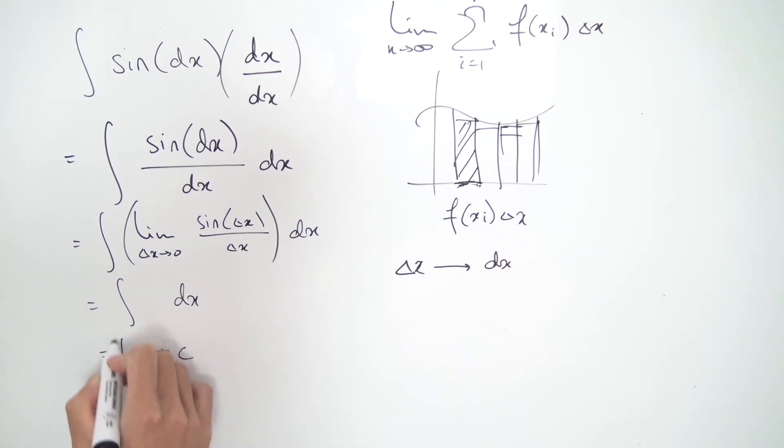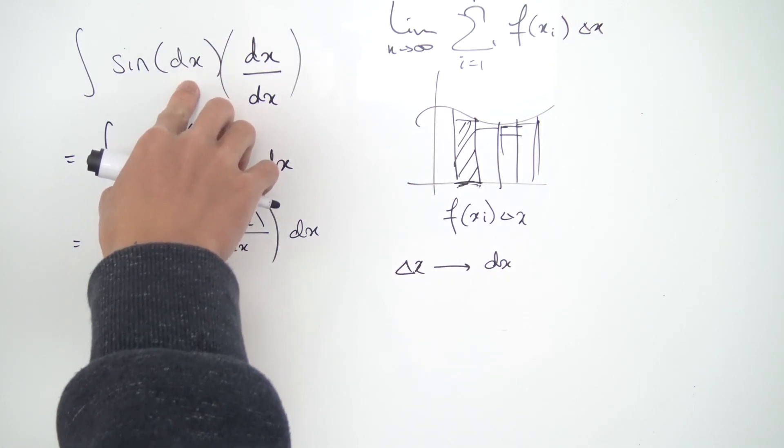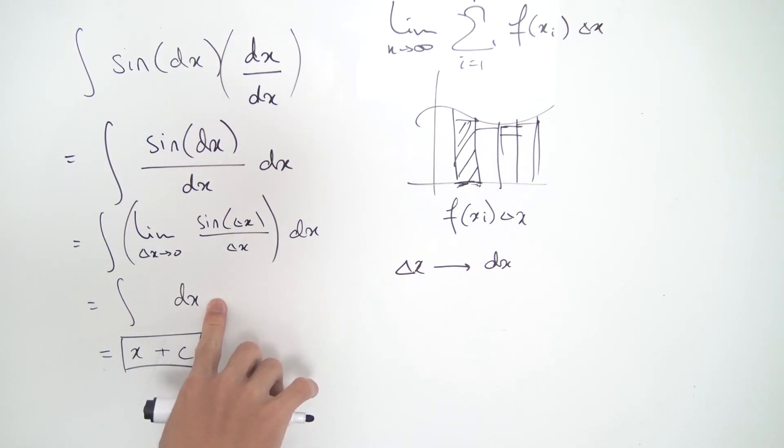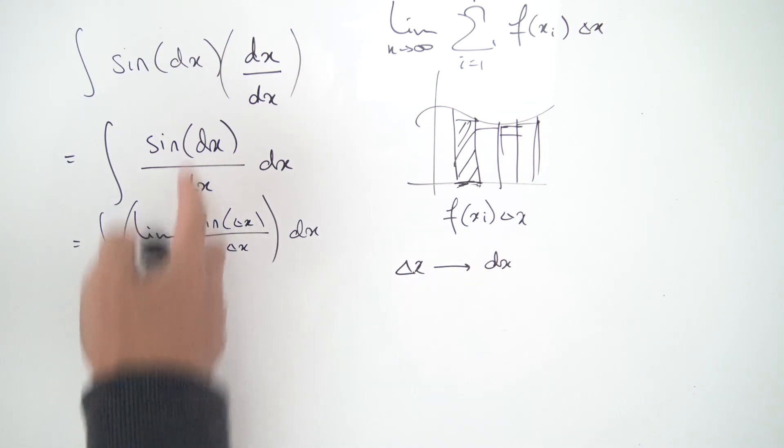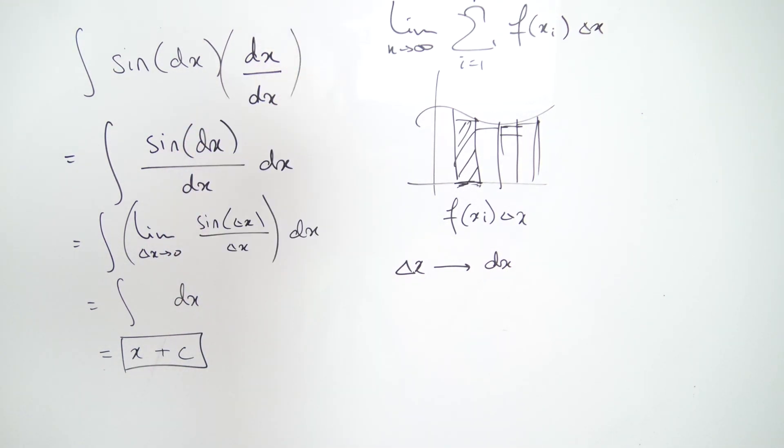So this actually just becomes x plus some constant c, and then we are done. So that's pretty interesting—the integral of the sine of dx is exactly the same thing as the integral of dx, and that just evaluates to x plus c. That's a pretty exotic looking expression that we started off with, but actually evaluates to something that we quite well understand.